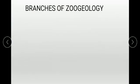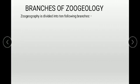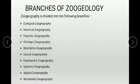Zoo geography is divided into ten following branches: ecological zoo geography, historical zoo geography, faunistic zoo geography, chronological zoo geography, descriptive, causal, experimental, systemic, applied, and biocoenotic zoo geography.